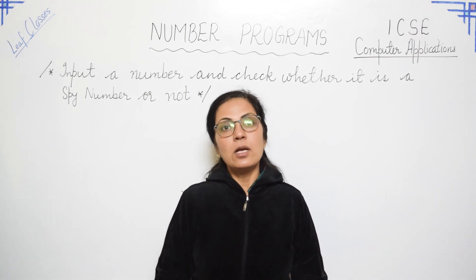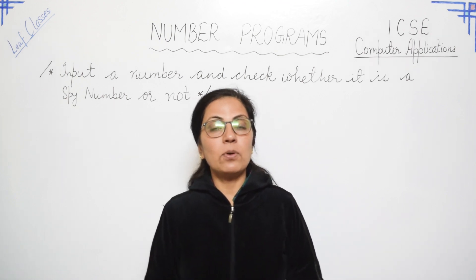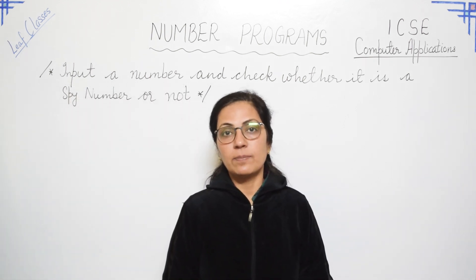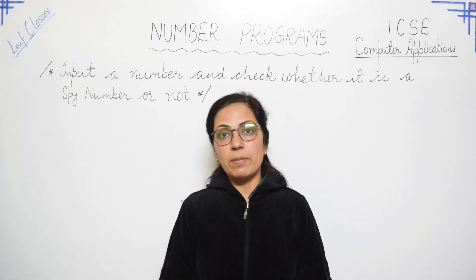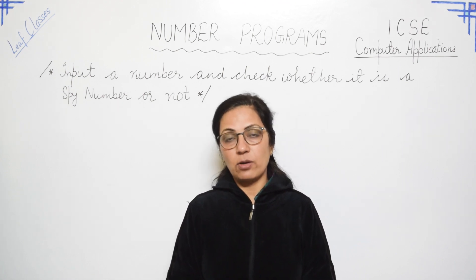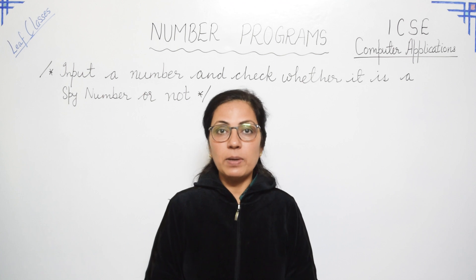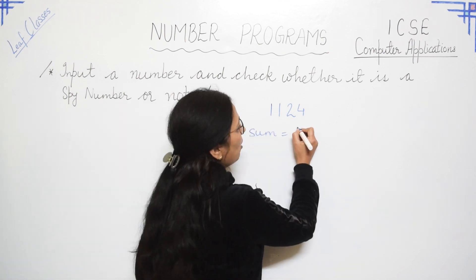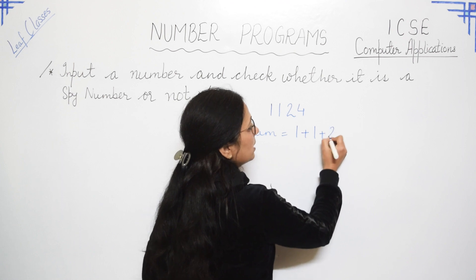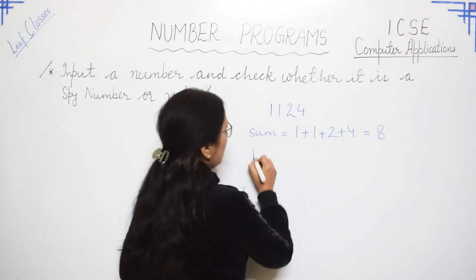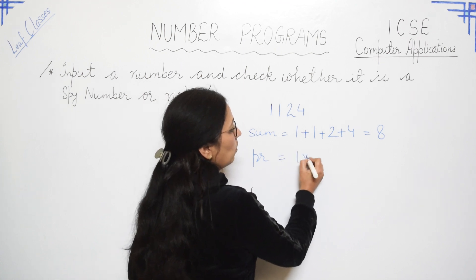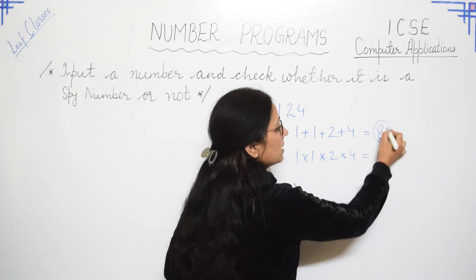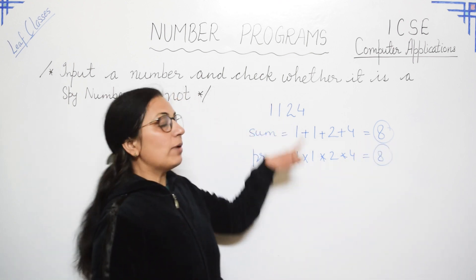Today we will be doing the program for the spy number. You have to input a number and check whether it is a spy number or not. If the sum of the digits of a number is equal to the product of the digits of that number, then that number is said to be a spy number. For example, take 1124. The sum of the digits is 1+1+2+4, which equals 8, and the product of 1×1×2×4 also equals 8.